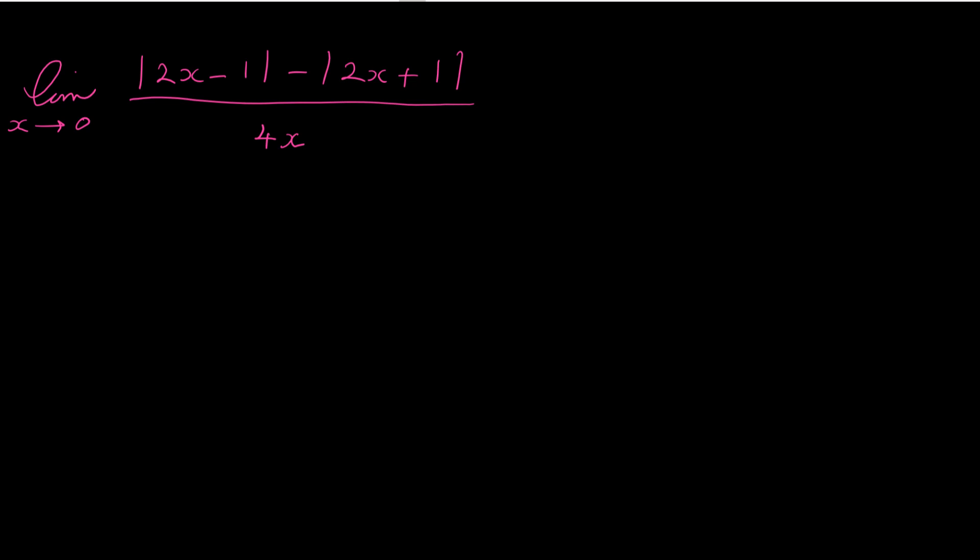Hello and welcome. In this video we want to find the following limit: the limit of absolute of 2x minus 1 minus absolute of 2x plus 1, all over 4x, as x approaches 0.